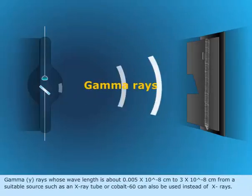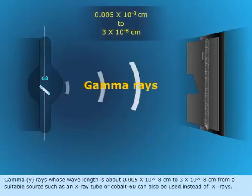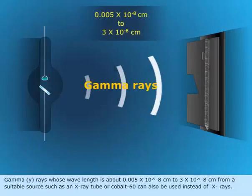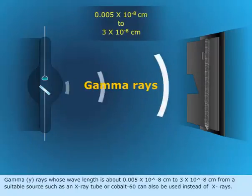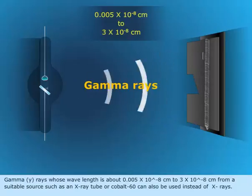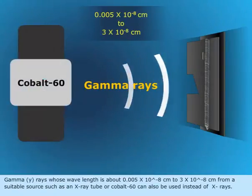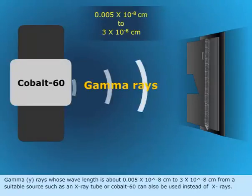Gamma rays whose wavelength is about 0.005 x 10^-8 cm to 3 x 10^-8 cm from a suitable source such as an X-ray tube or cobalt-60 can also be used instead of X-rays.